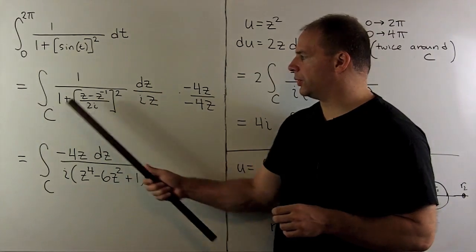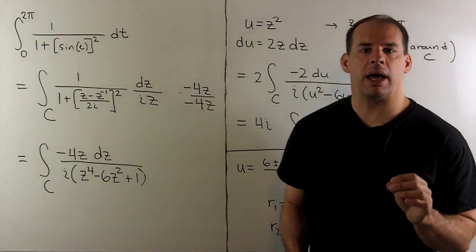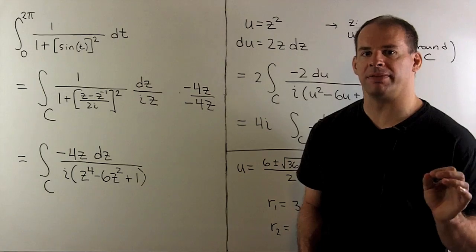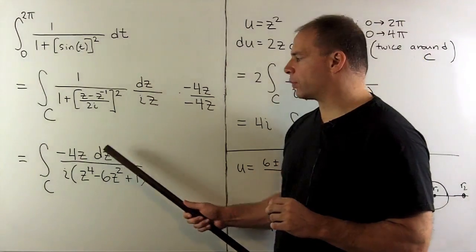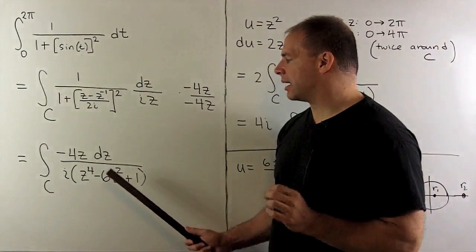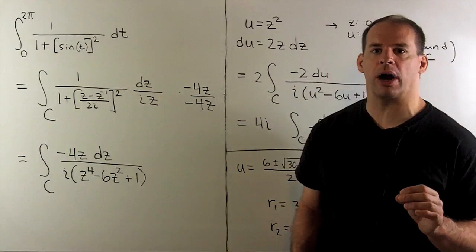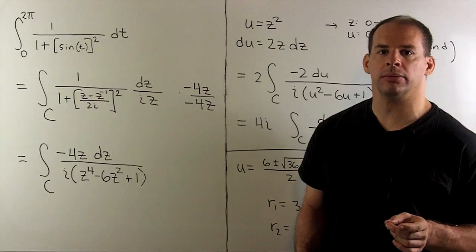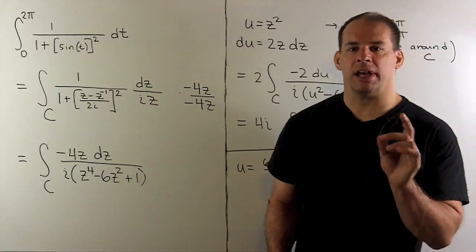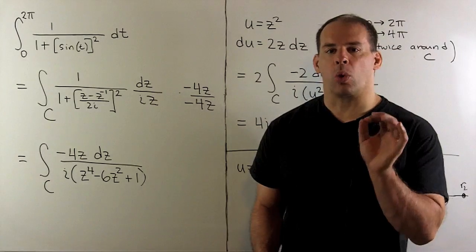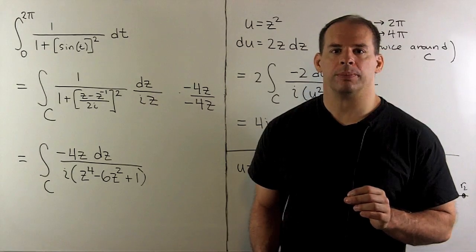We substitute in. I'll multiply by minus 4Z over minus 4Z to help simplify the denominator. Then we get minus 4Z dZ over i times Z to the fourth minus 6Z squared plus one. We could apply the residue theorem here. But, if I take one extra step, our work will be a little bit easier.